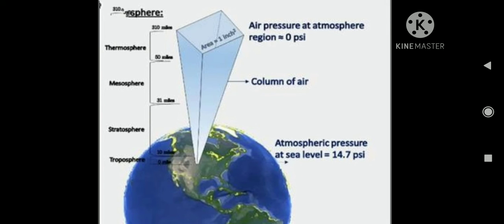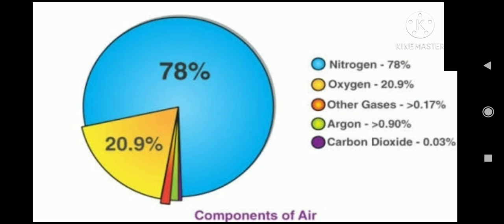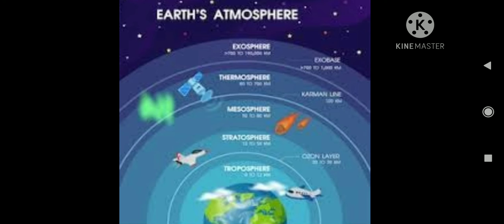Our Earth's atmosphere is made up of a number of gases, although these gases cannot be seen with the naked eye. Still, they have weight and therefore exert pressure on the Earth's surface.